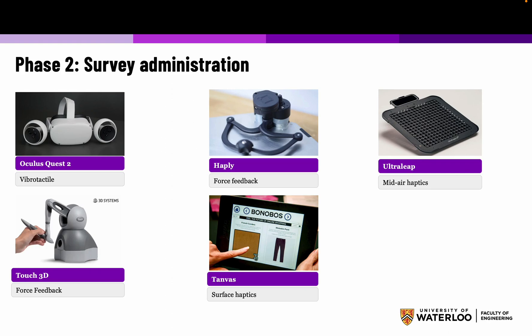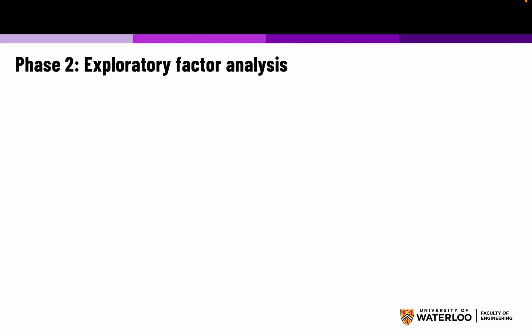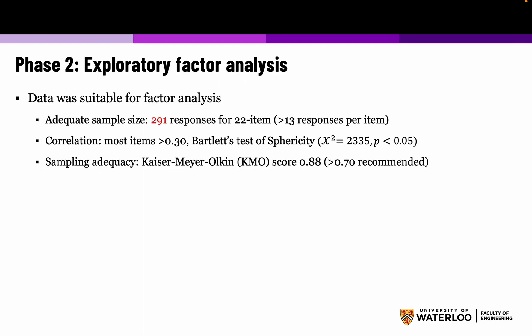In the current study, we administered a survey with five different devices with different modalities. For vibrotactile feedback we used an Oculus Quest 2; for force feedback, a Haply and a Touch 3D; for mid-air haptics, an Ultraleap device; and for surface haptics, a Tanvis device. The study took place in a campus coffee shop at the University of Waterloo, where people would interact with the device and then complete our 22-item questionnaire on either their mobile phone or the provided laptop. We then conducted exploratory factor analysis, found that data was suitable, with adequate sample size and all correlations meeting recommendations.